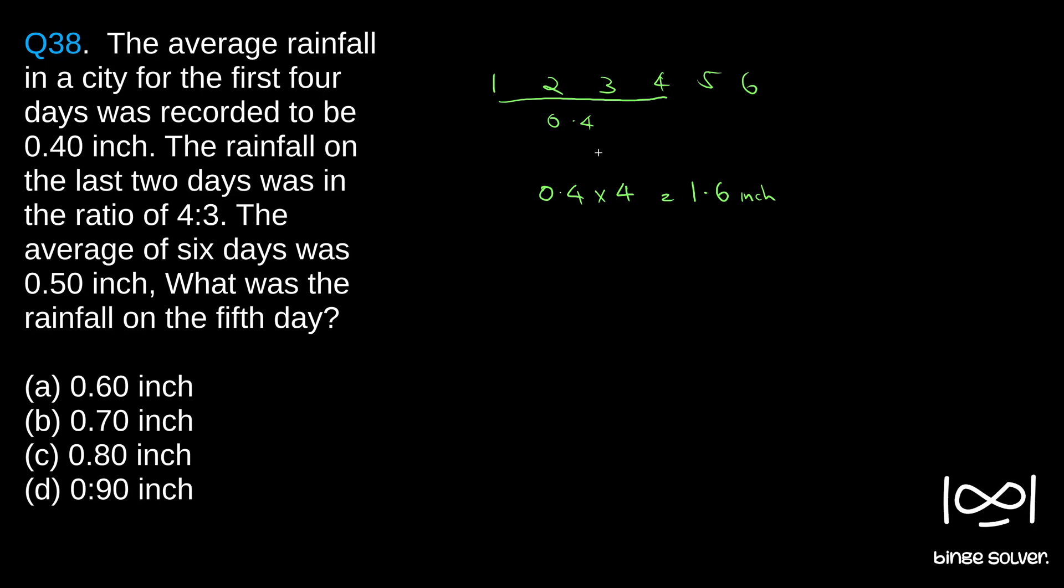It is given the rainfall on the last two days was in the ratio 4 to 3. If x was the rainfall, we can say 4x to 3x. The rainfall that fell on 5 and 6 was in the ratio 4 to 3. Let it be 4x and 3x.